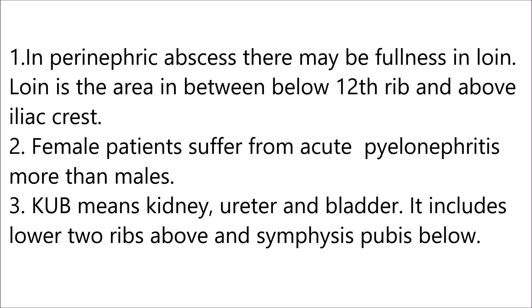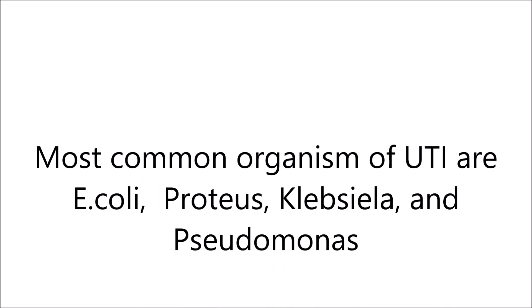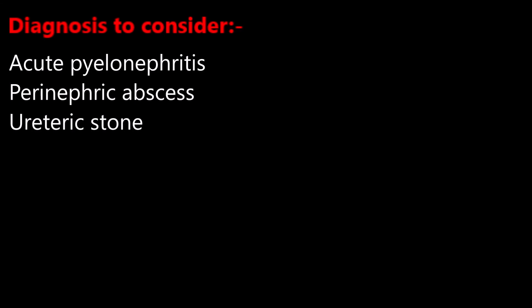In perinephric abscess there may be fullness in the loin — the area between below the 12th rib and above the iliac crest. Female patients suffer from acute pyelonephritis more than males. KUB includes lower lobe ribs above and symphysis pubis below. IVU (intravenous urogram) — bowels should be prepared and serum creatinine should be normal. Serial films are taken: first a control film before giving IV dye, then a nephrogram just after giving the dye, then a pyelogram after five minutes, a ureterogram at ten minutes, and a cystogram at fifteen minutes. The most common organisms in urinary tract infections are E. coli, Proteus, Klebsiella, and Pseudomonas. Diagnoses to consider: acute pyelonephritis, perinephric abscess, ureteric calculus.